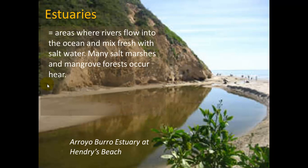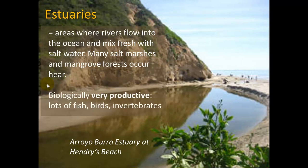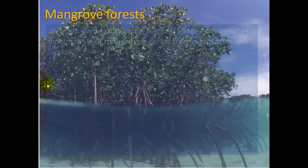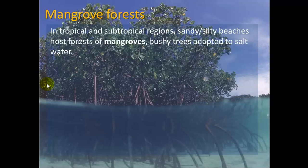Estuaries, like the local one at Arroyo Burro / Henry's Beach, are areas where rivers flow into the ocean and mix fresh water with salt water. Many salt marshes and mangrove forests occur in estuaries. Biologically they are very productive — lots of nutrients, fish, birds, and invertebrates.